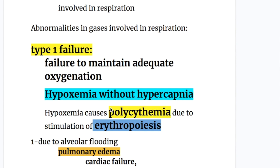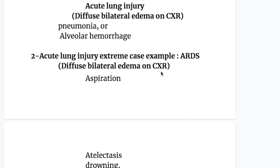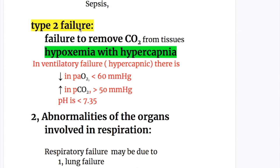Type 1 failure is failure to maintain adequate oxygenation — that is, hypoxemia without hypercapnia. The carbon dioxide may be normal or decreased, because hypoxia stimulates respiration that blows off carbon dioxide. Hypoxemia also causes polycythemia due to stimulation of erythropoiesis. It may be due to alveolar flooding or acute lung injury. Alveolar flooding may be due to pulmonary edema, pneumonia, or alveolar hemorrhages. Pulmonary edema may be due to cardiac failure, volume overload, or acute lung injury as in ARDS, shown as diffuse bilateral edema on chest X-ray. Causes include aspiration, atelectasis, drowning, pulmonary edema, and pneumonia.